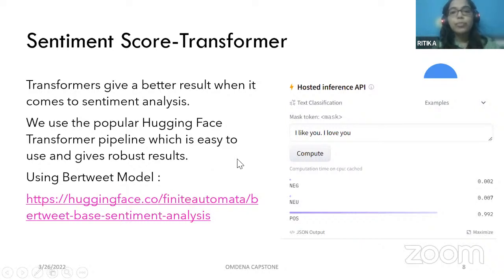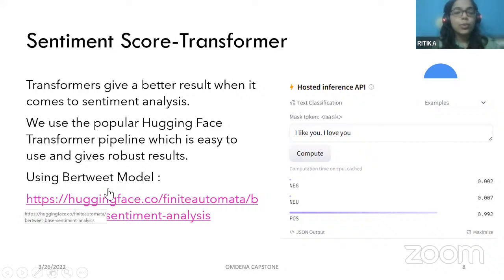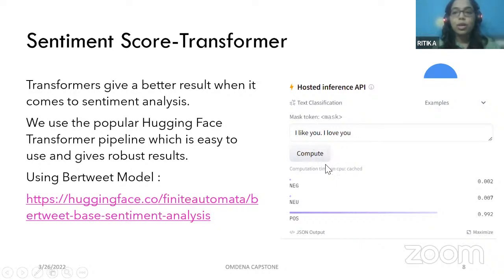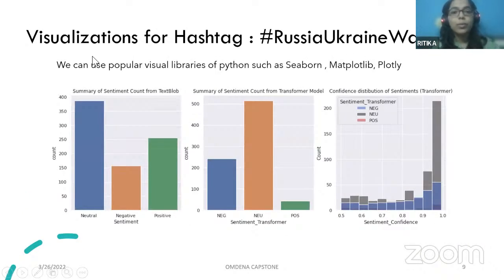We have a popular transformer library presented by Hugging Face. Using the Hugging Face transformer pipelines, we can easily construct our transformer tokenizer as well as transformer classifier. What I used was a tweet-based fine-tuned model — the BERTweet model by FiniteAutomata. Using that model, the output gives us three sentiments: negative, neutral, and positive, along with scores for each.